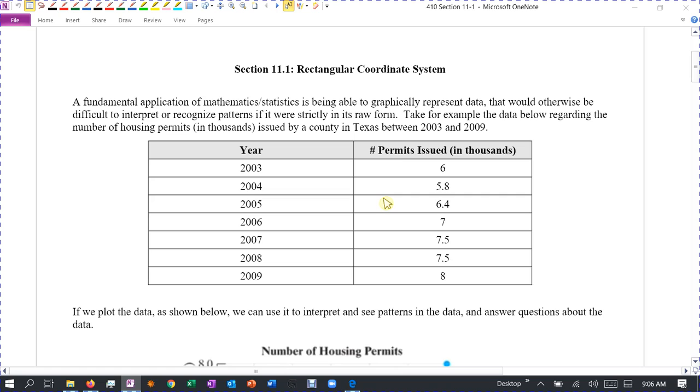So the beginning here gives us a table, and what we have here is a list of years. And on this side is the number of housing permits that are issued in thousands. So you can see, like in 2003, there were 6,000 housing permits issued. In 2007, there were 7,500, so that's 7,500 permits issued.